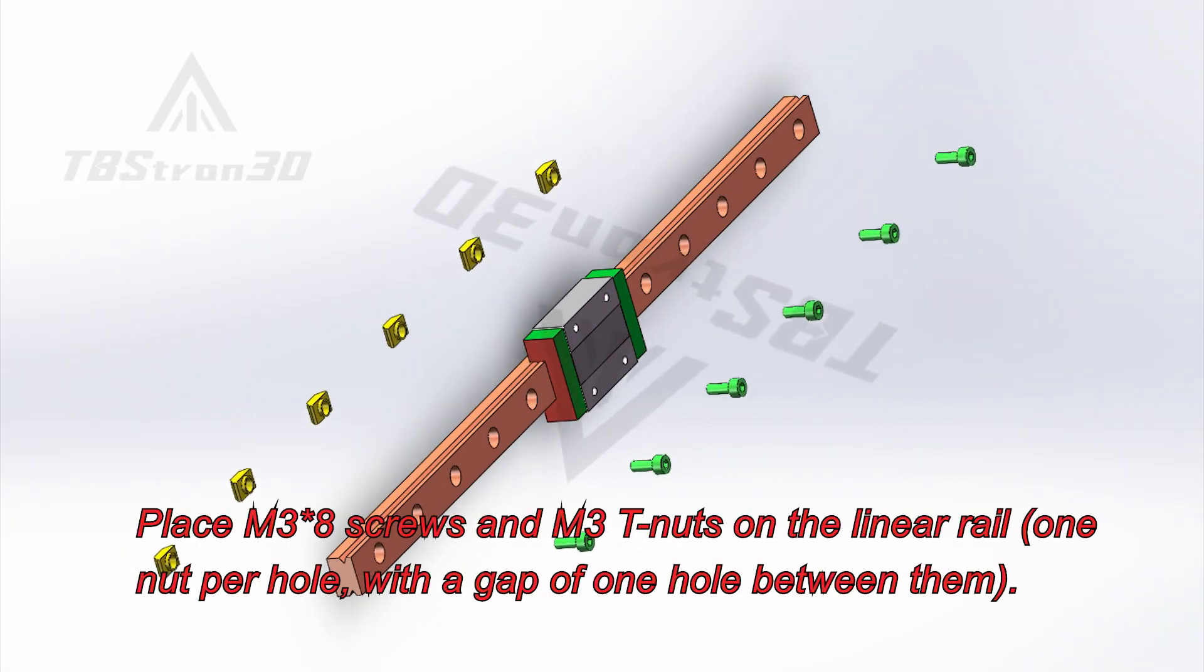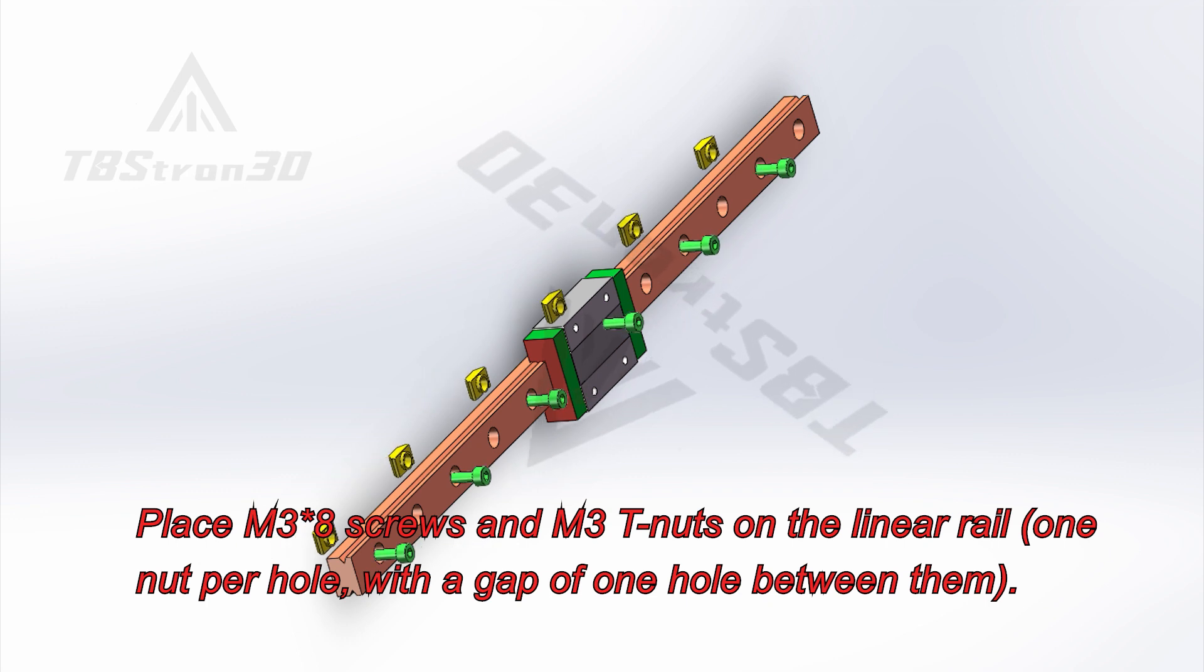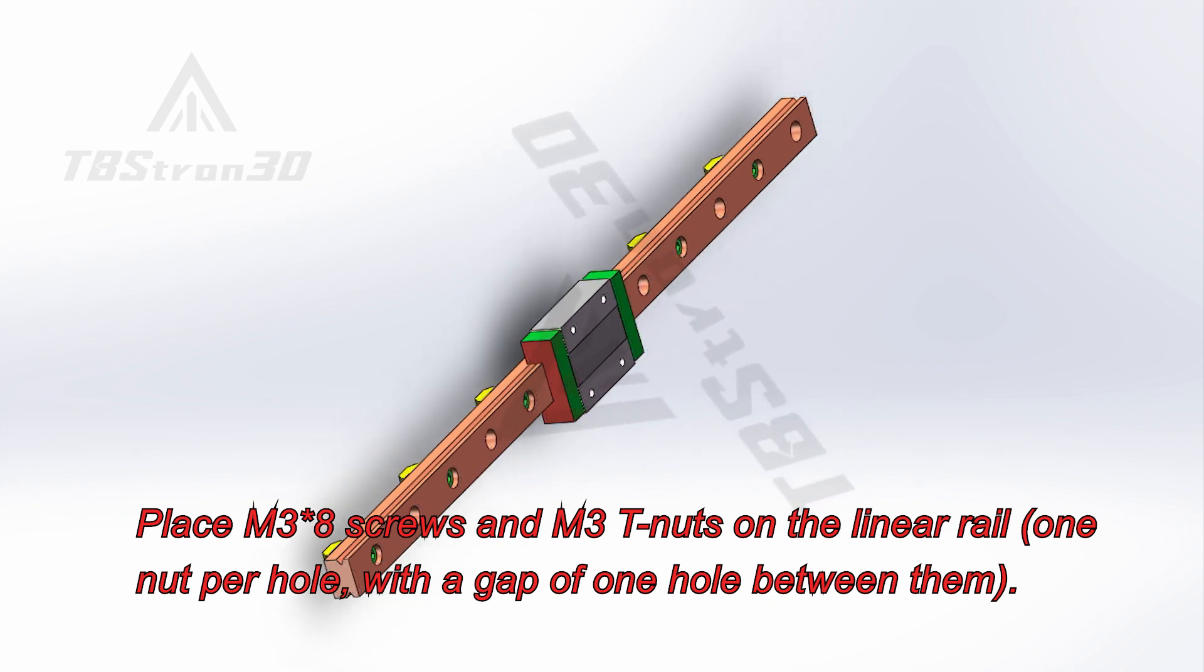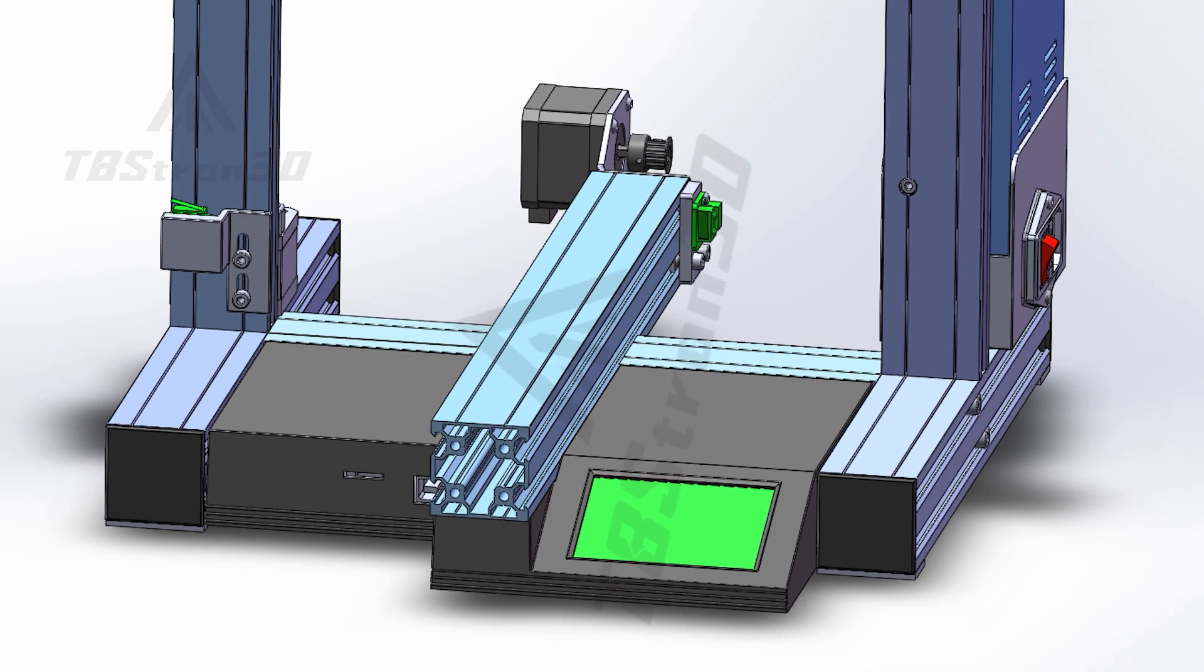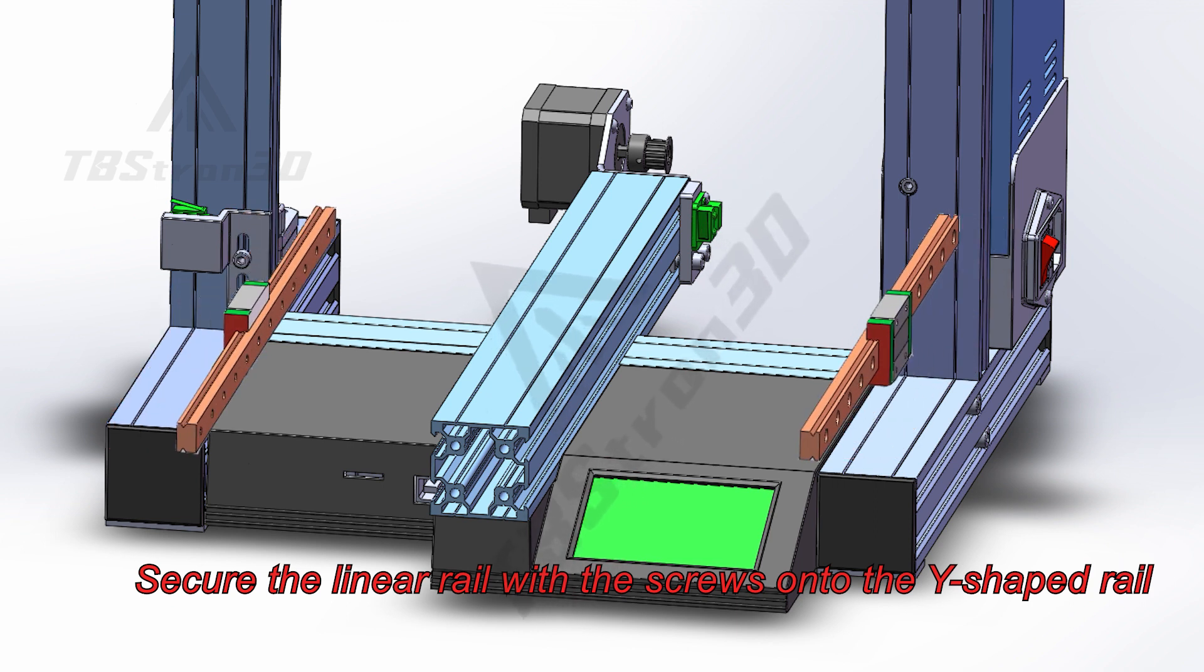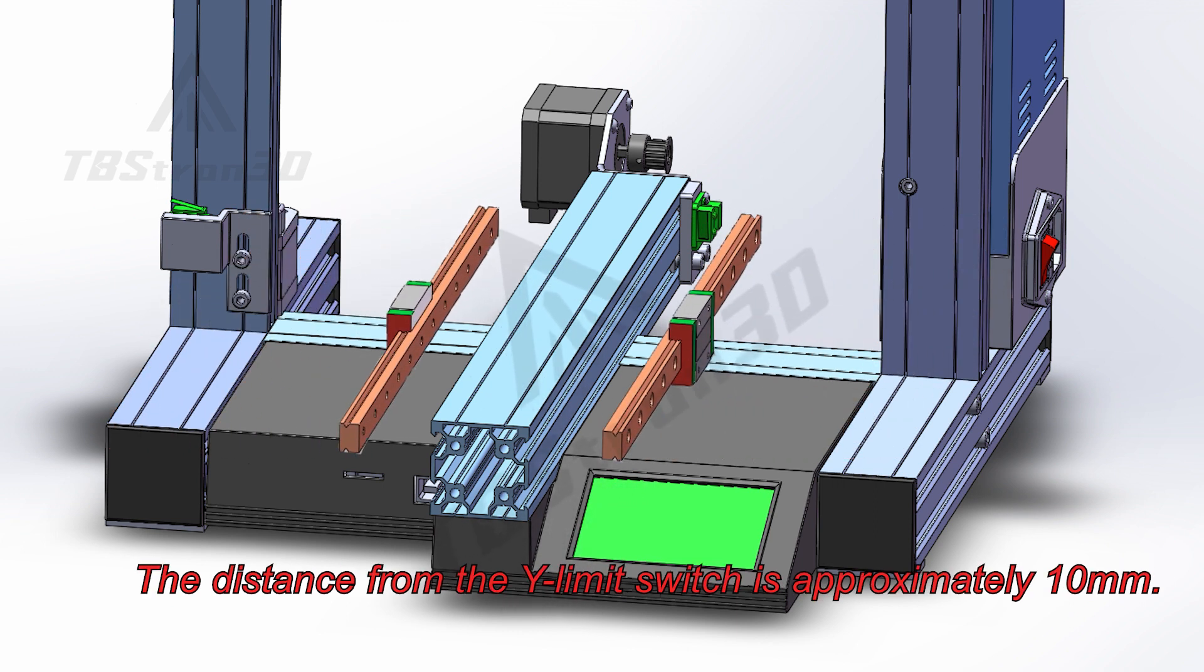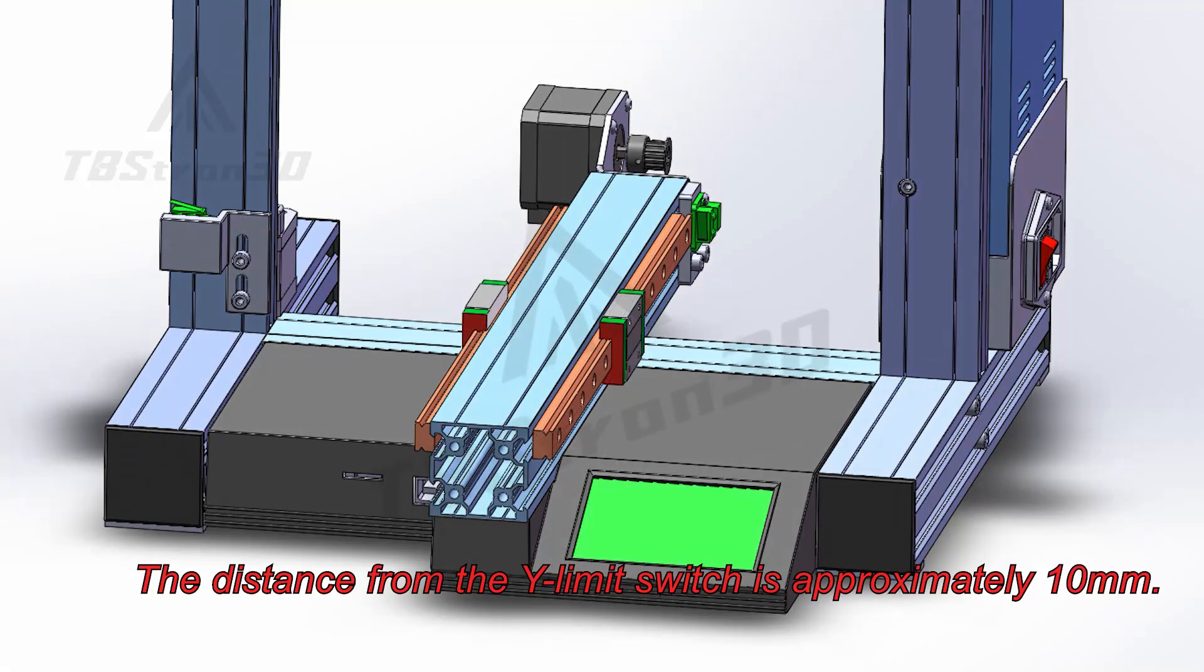Place M38 screws and M3T nuts on the linear rail, one nut per hole, with a gap of one hole between them. Secure the linear rail with the screws onto the Y-shaped rail. The distance from the Y limit switch is approximately 10 mm.